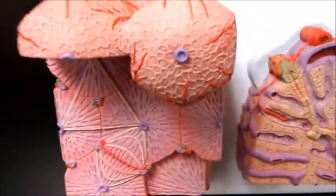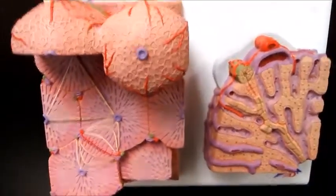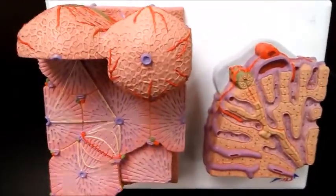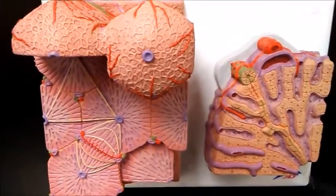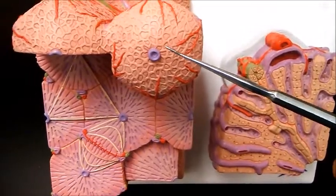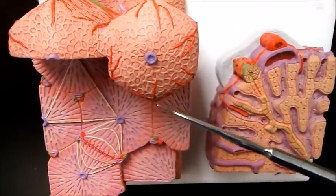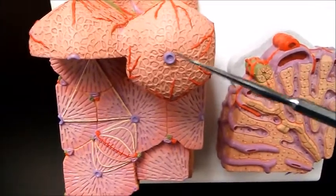This particular model shows that the lobes of the liver are divided into smaller units. These are the functional units of the liver, and each one of these units is known as a lobule.